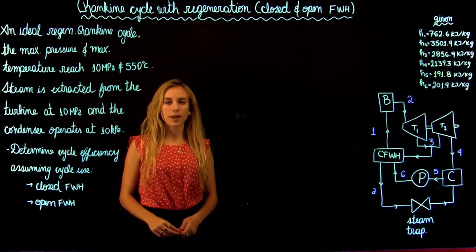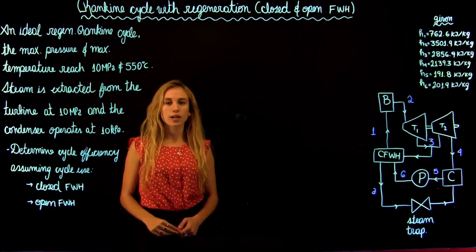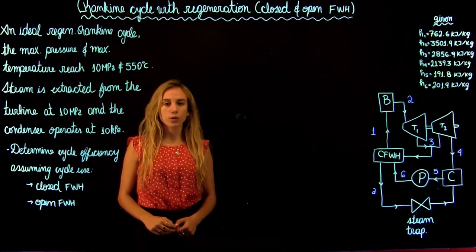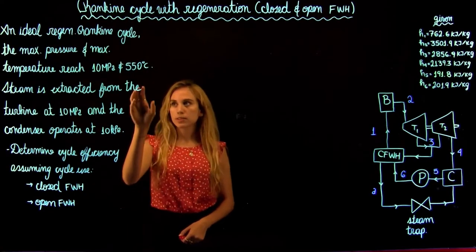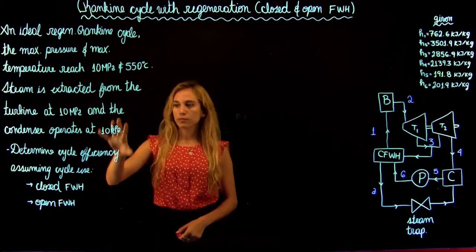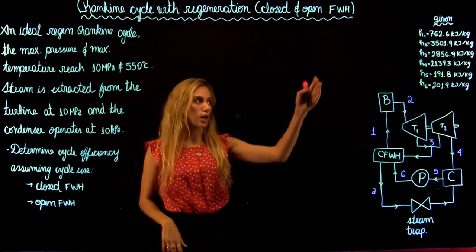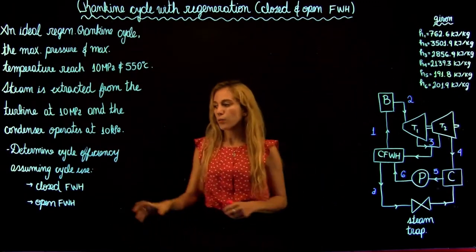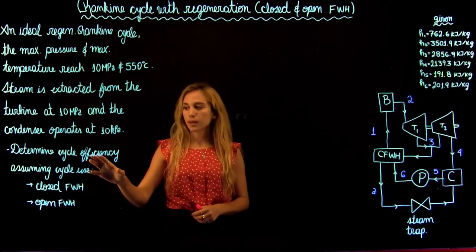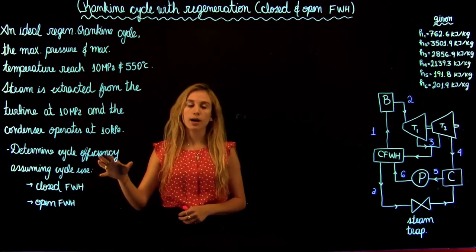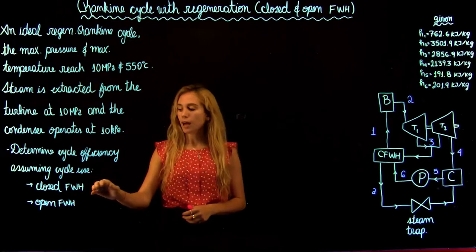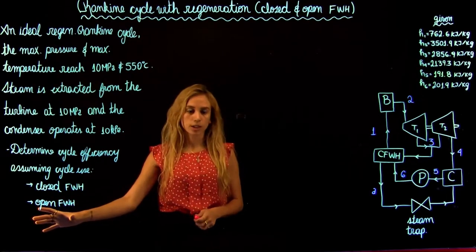Hello and welcome to Thermodynamics 2 tutorials with Maria. We're going to be solving a Rankine cycle with real regeneration that has an open feedwater heater and also a closed feedwater heater. We are given a problem with different values and all the enthalpies, and we are asked to find the cycle efficiency assuming first that we have a closed feedwater heater and then assuming that we have an open feedwater heater.